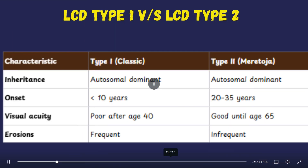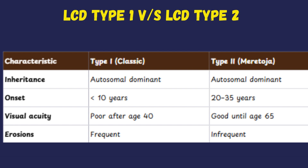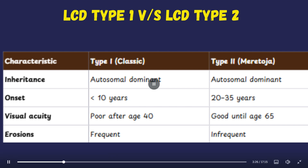Here's a quick summary. Inheritance: both Type 1 and Type 2 are autosomal dominant. Age of onset: Type 1 usually starts before 10 years of age, while Type 2 presents later between 20 to 35 years. Vision in Type 1 often declines after 40 years due to stromal haze, whereas in Type 2, vision tends to remain good until about 65 years. Erosions are more frequent in Type 1 but uncommon in Type 2.